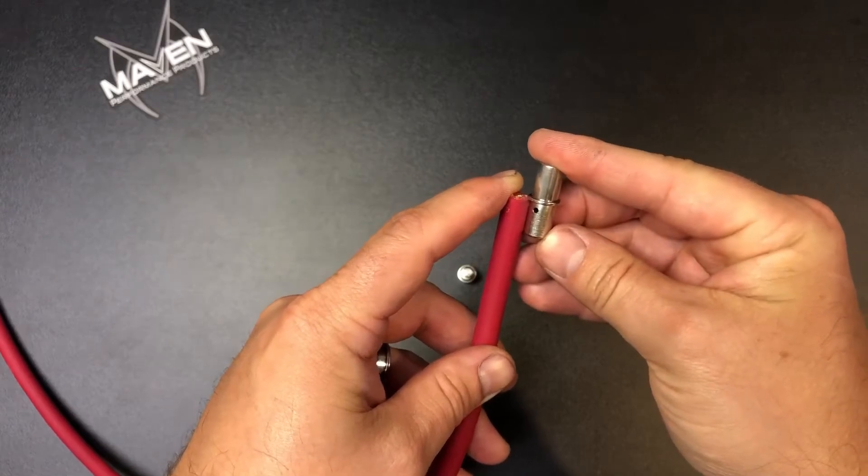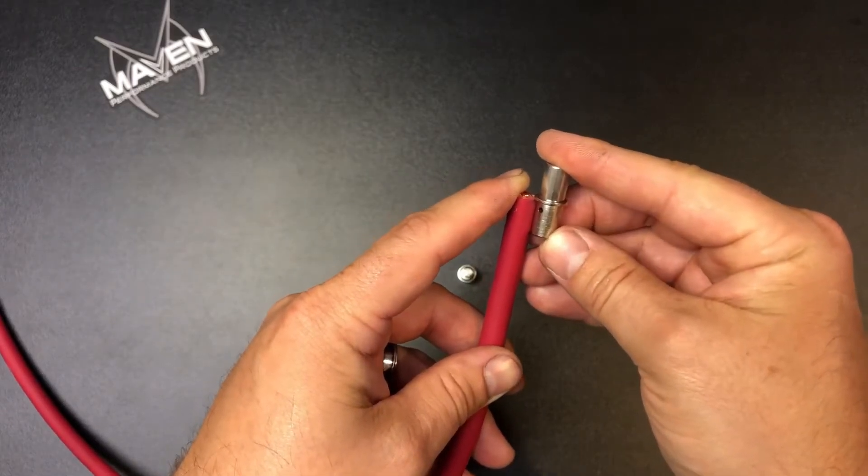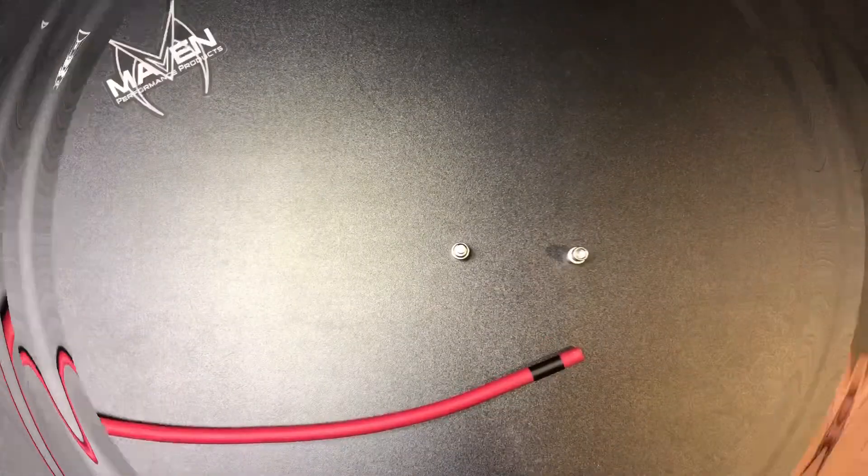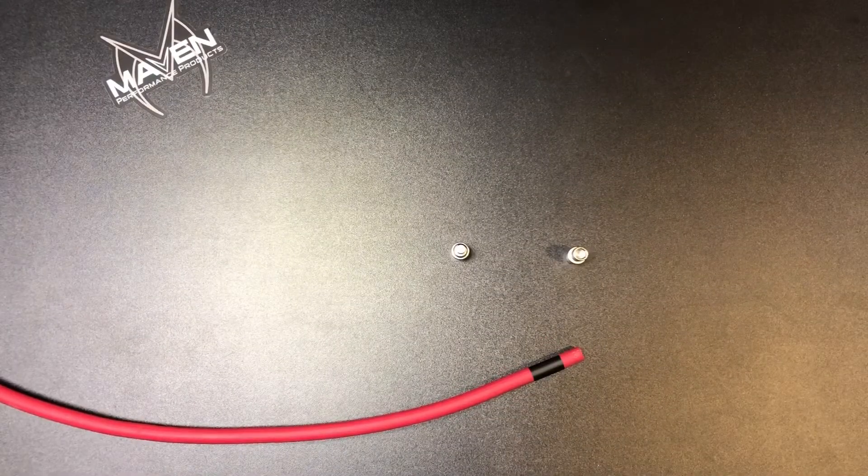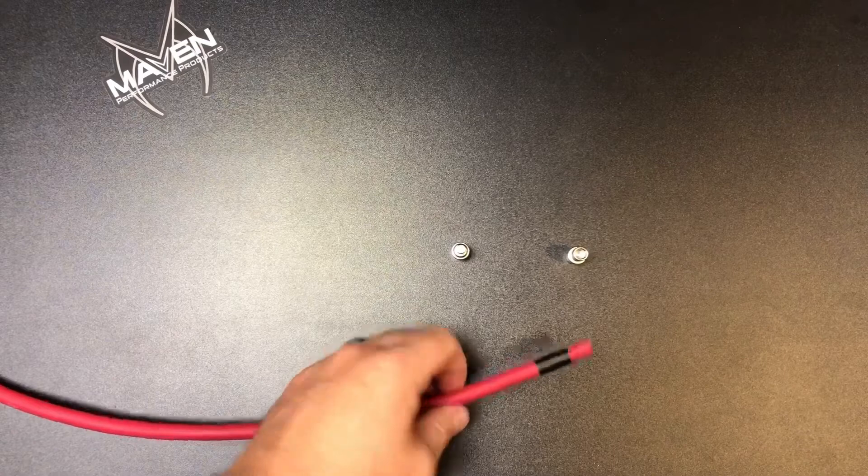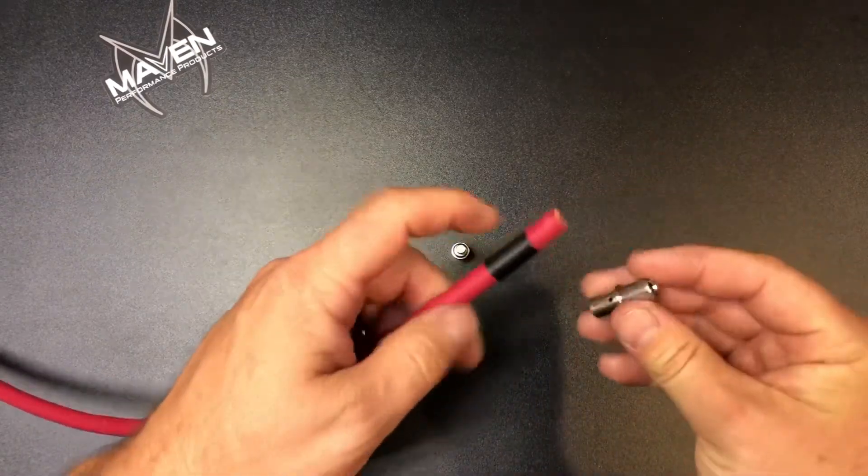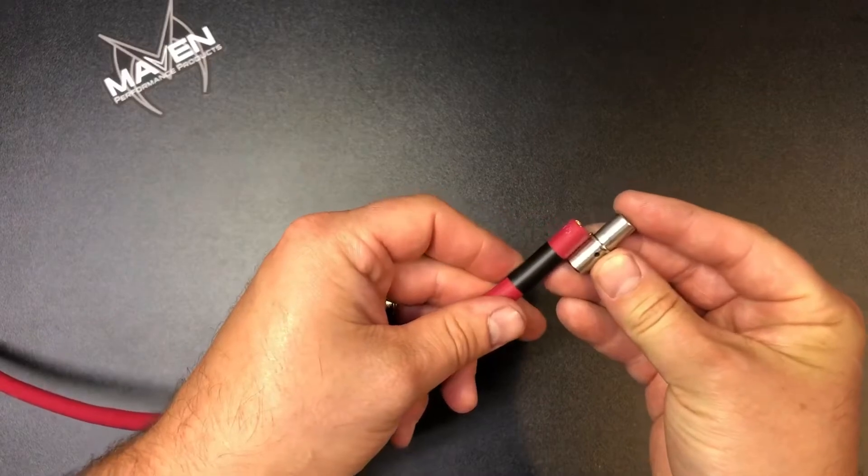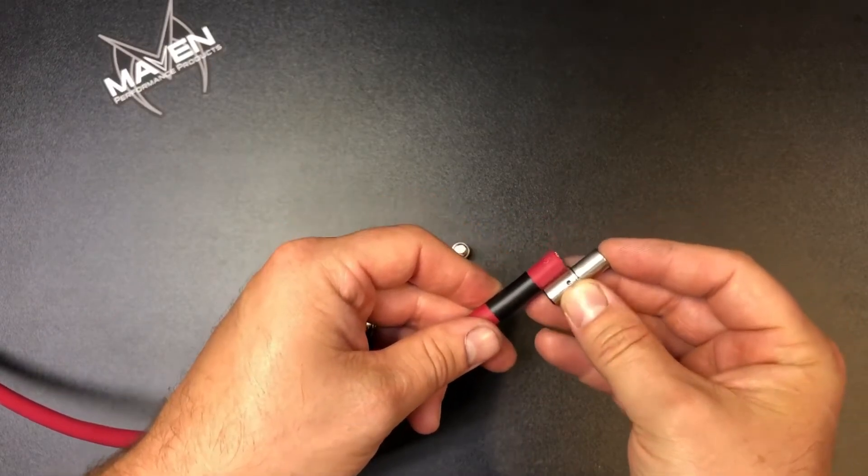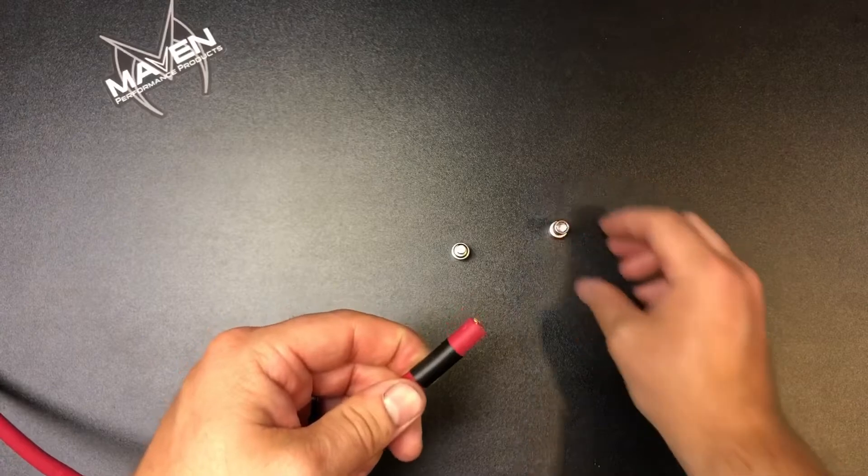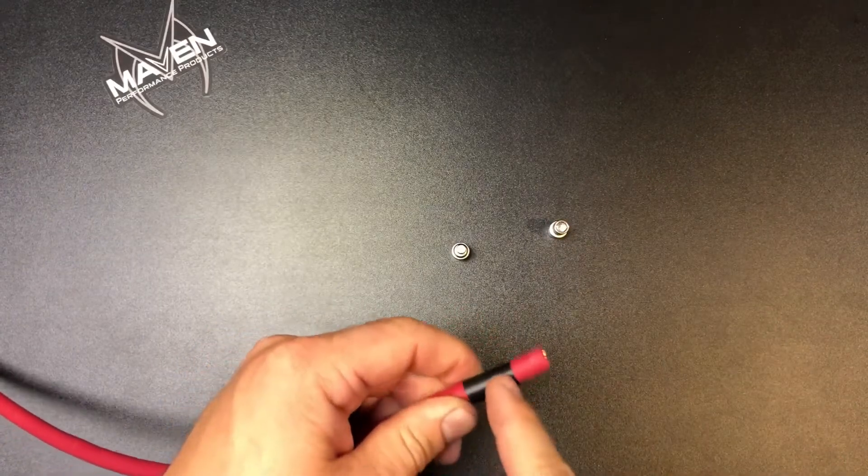One thing I like to do when stripping the insulation off this four gauge cabling is to put a piece of tape on it. I use this as my guide—the terminal—to make sure I have enough depth plus a little. Then I'll often just use a utility knife. Just make sure you're really careful when you cut through the insulation so you don't get into the wire.